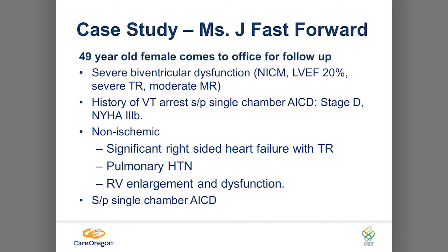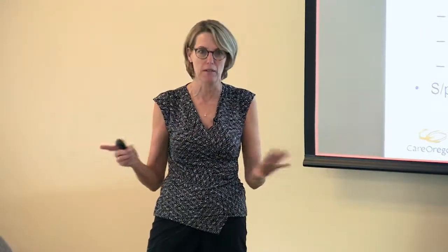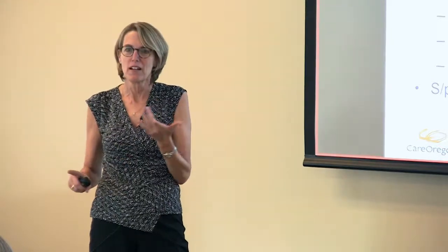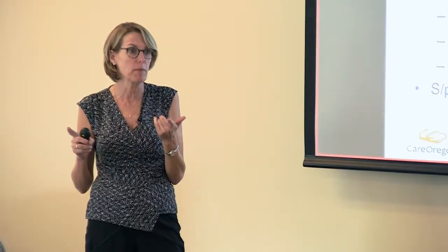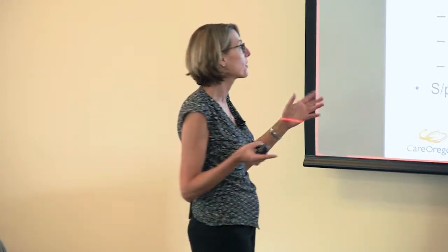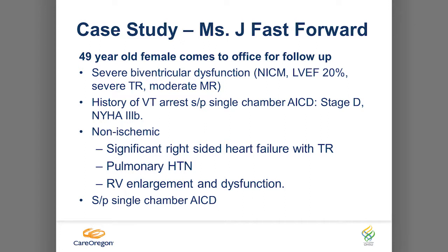Mrs. J is a 49-year-old who comes to the office for follow-up with a history of VT arrest. She had 9 or 10 hospitalizations. She loved to come into the ER in full cardiac arrest — either her potassium was 2 or it was 7. One time she decided she liked to take potassium because she thought it was her heart pill that made her heart stronger, so she took so many that she came in totally dead with a potassium of 7. She was resuscitated and did fine. She did have an ICD. She was stage D at this point and New York Heart class 3B — more than a three but not quite a four — with significant right-sided failure.